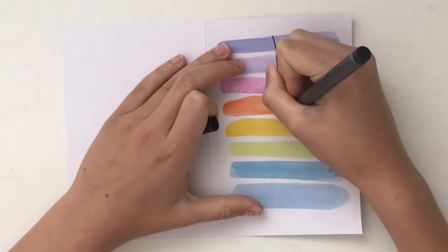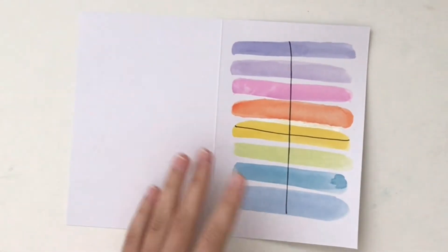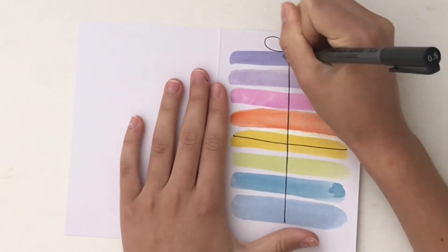Once it has dried, you start off by drawing a vertical line down the middle and then a horizontal line across, and then draw a bow at the top to finish it off and make it look like a gift.